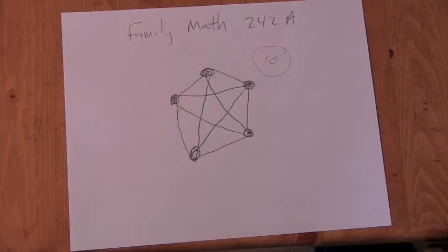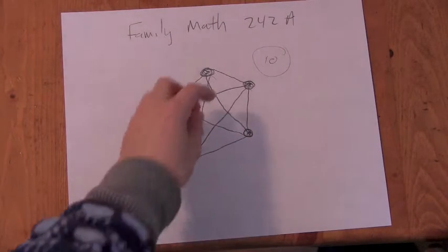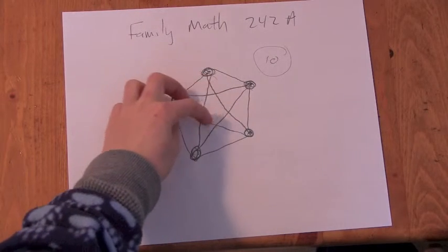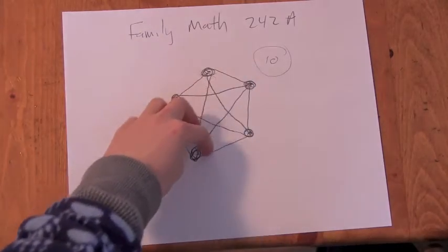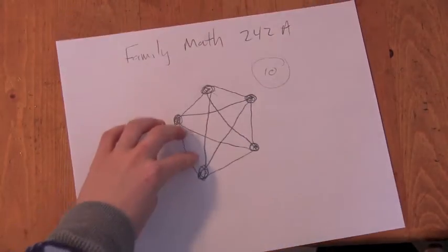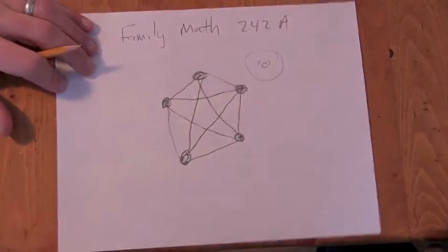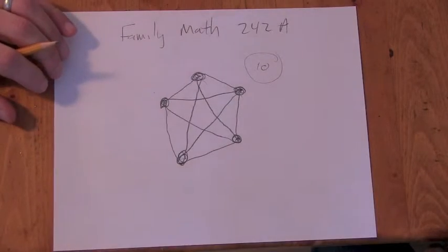So if you follow that procedure, what do you get? Well, you get one, two, three, four, five on the inside and then one, two, three, four, five on the outside. Interesting. I can see ten.